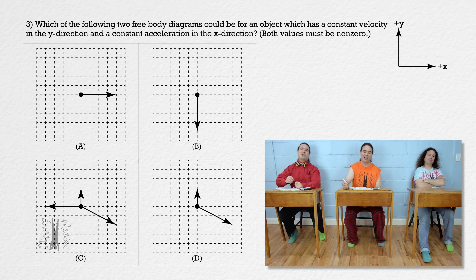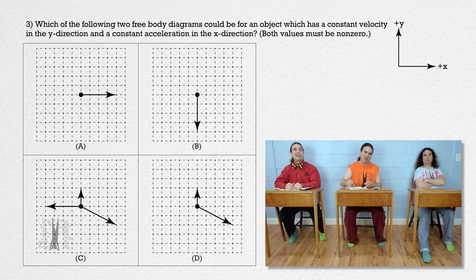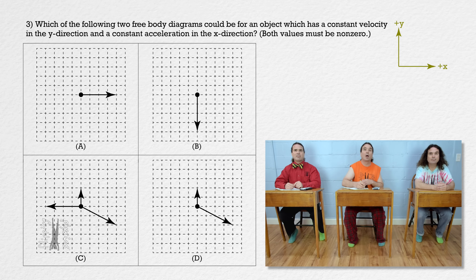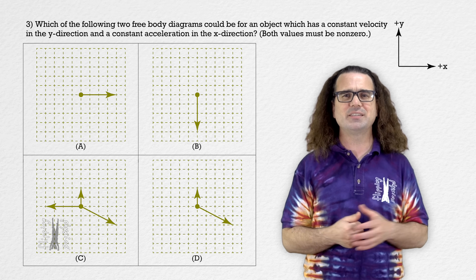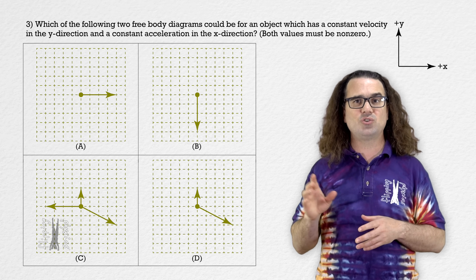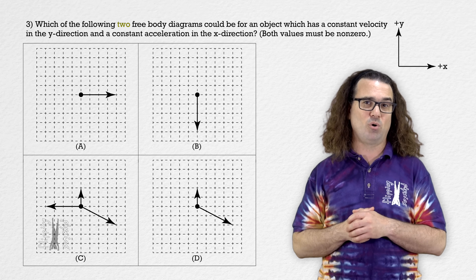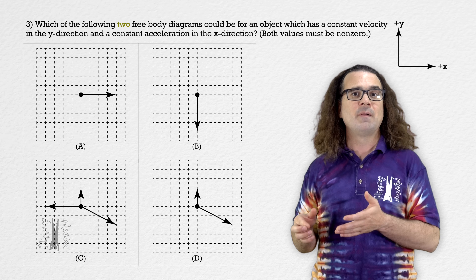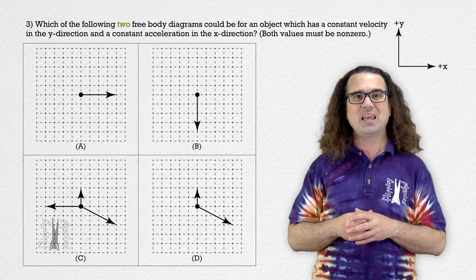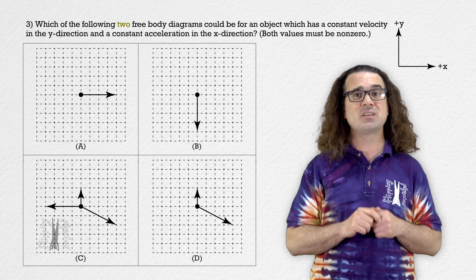Billy, please read question 3. Which of the following two free body diagrams could be for an object which has a constant velocity in the y direction and a constant acceleration in the x direction? There are positive x and positive y coordinate directions with positive x to the right and positive y upward. This problem has two correct answers and you need to identify both. The last five multiple choice questions on the AP Physics 1 exam will be like this — two correct answers — and you need to correctly identify both to get full credit.